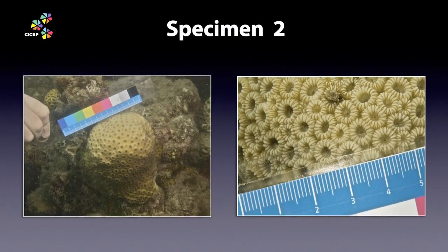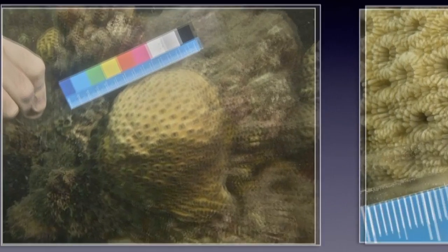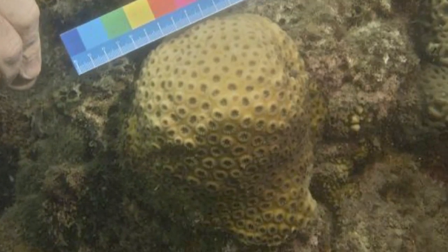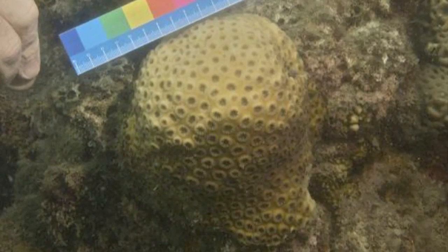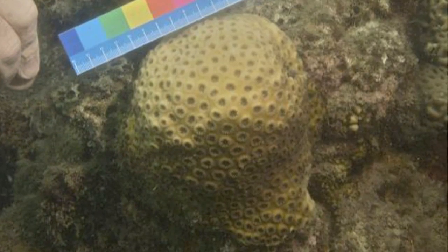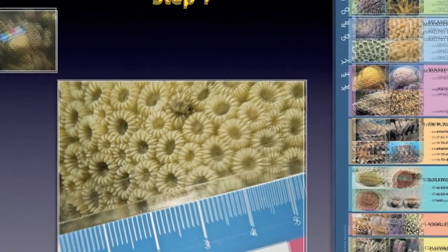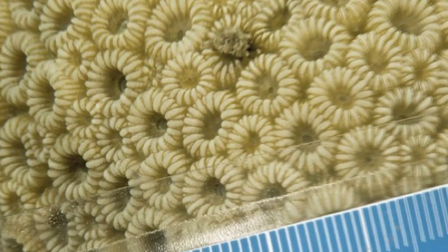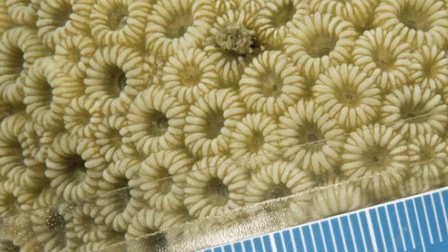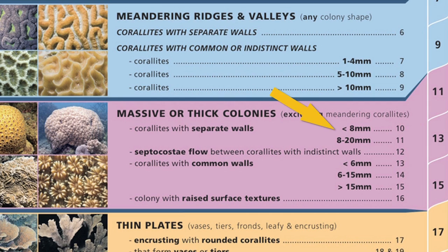Specimen 2. Now we have a medium-sized massive coral. Remember, massive means the coral is roughly equal in all dimensions — length, width, and depth. Using the massive key group, we note that it has beautiful rounded coralites with separate walls. These coralites average 5 to 6 millimetres in diameter. So we're off to lookalike page 10.